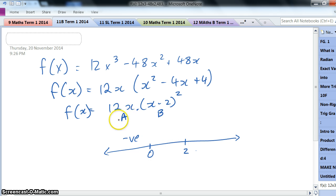Between 0 and 2, A term, 12x, will be positive. The B term is always positive, so I'm going to have a positive.